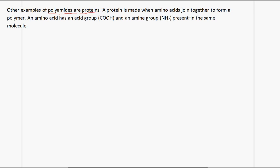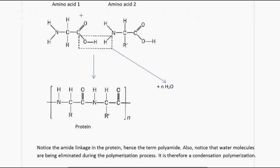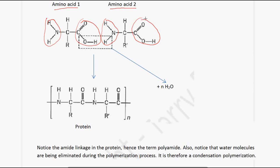A protein is made when amino acids join together to form a polymer. An amino acid has an acid group as well as an amine group present in the same molecule. In each amino acid, we have both the amine group and the acid group. The OH from the acid and the H from the amine come out to give a water molecule, forming the amide bond or amide linkage. This represents a protein or part of a protein molecule.